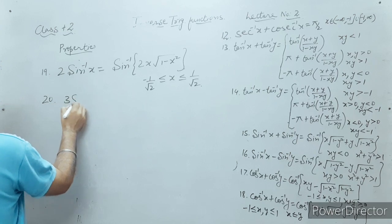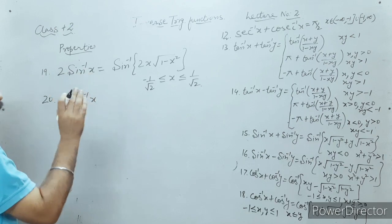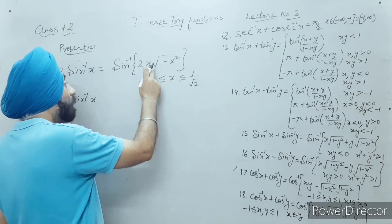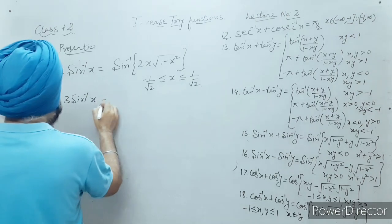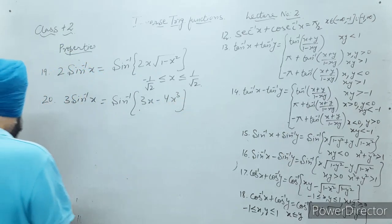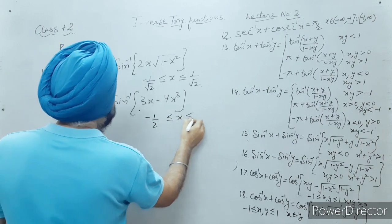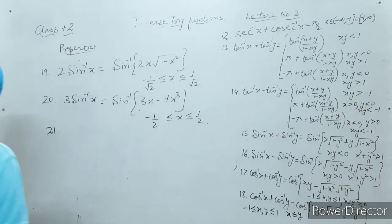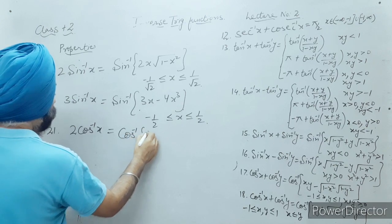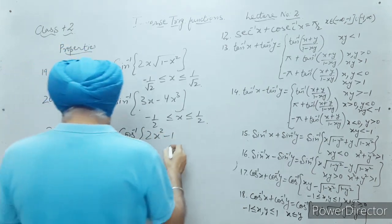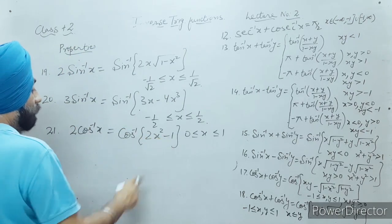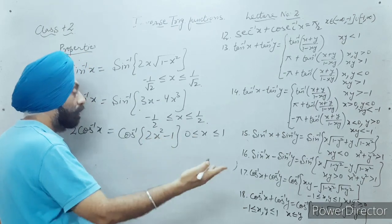The 20th property: 3 sine inverse x equals sine inverse of (3x minus 4x³), where x belongs to minus one half to positive one half. Next, 2 cos inverse x equals cos inverse of (2x² minus 1), where 0 is less than or equal to x less than or equal to one. This is essentially the formula of cos 2θ equals 2 cos²θ minus 1.